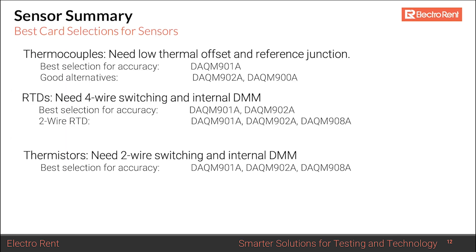Here is a summary of sensors and the best cards to use for each. For thermocouples, you want the lowest thermal offset, so the DAQM901A is the clear winner. If absolute low thermal offset is not critical, the DAQM902A and DAQM900A can serve as alternatives.